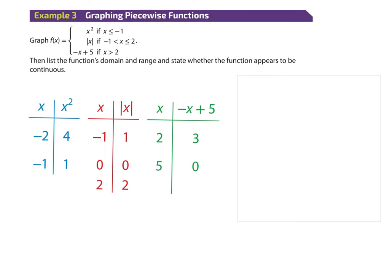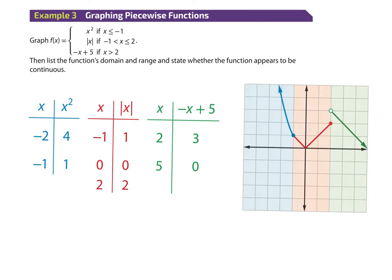So the picture is: a parabola, then a V-shape, then a jump, then a line going down. The parabola piece connects to the absolute value piece (closed circle), the absolute value goes all the way up with a closed circle at x=2, then we jump to y=3 with an open circle and go down from there.